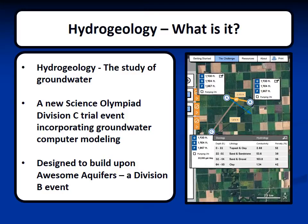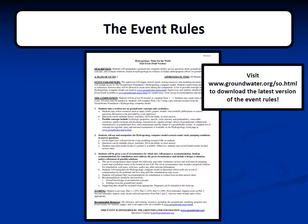Awesome Aquifers was also developed by the Groundwater Foundation, but is a Division B event. The most current version of the event rules can be found at the Groundwater Foundation's website, www.groundwater.org/so.html. These rules will be updated throughout the trialing process, so make sure to check the website often for the latest updates and changes to the rules.